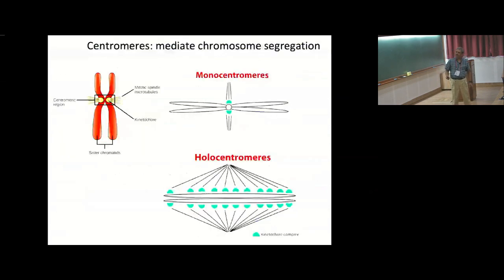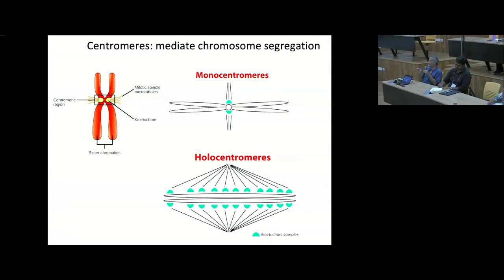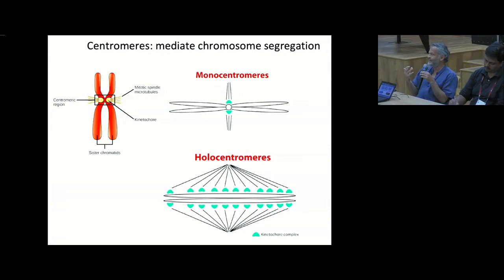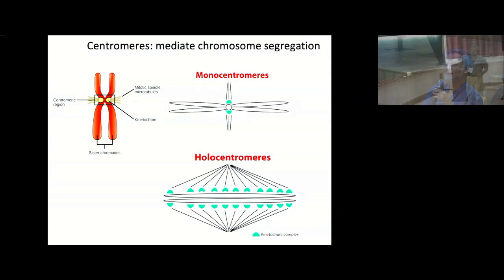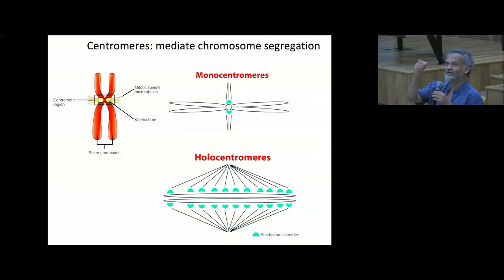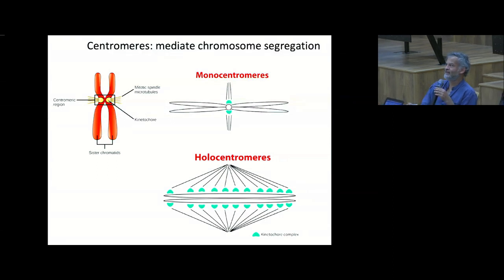Audience question: Does the mechanics, speed, integrity, and fidelity of segregation get altered between holocentromeres and monocentromeres? There are two questions: what is the difference in mechanics between mono- and holocentromeres, and does it lead to better control? I don't work on holocentromeres specifically, but what was believed is they were re-evolved 13 independent times. In which kingdoms? Mostly in insects and also in plants—C. elegans was the first organism where people studied holocentromeres extensively; cockroaches also have them.